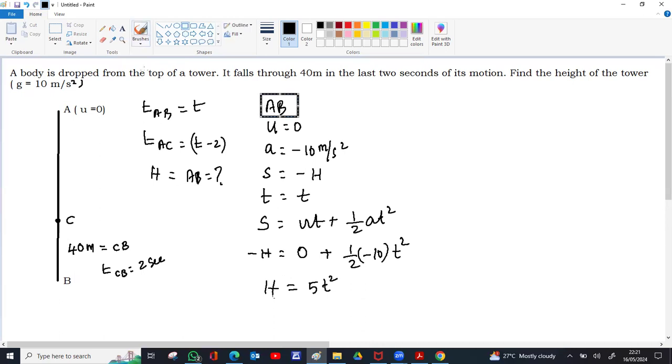Now what we have is A to C again. So considering A to C: u still 0, a is minus 10 meters per second square. Acceleration due to gravity is always minus if you consider the upward as positive and downward as negative.